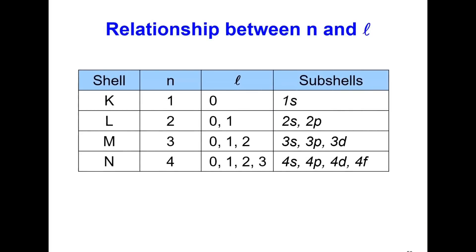For shell K (N=1), there is only one sub-shell: 1S. For shell L (N=2), there are two sub-shells: 2S and 2P. For shell M (N=3), there are three sub-shells: 3S, 3P, and 3D, corresponding to L=0, 1, and 2. For shell N (N=4), there are four sub-shells: 4S, 4P, 4D, and 4F, corresponding to L=0, 1, 2, and 3.